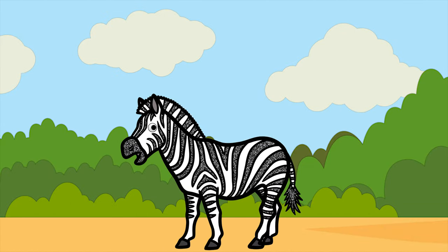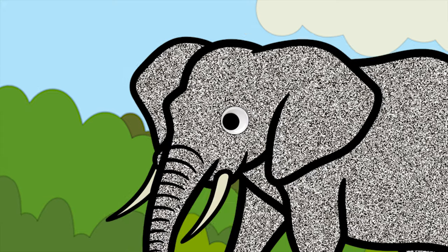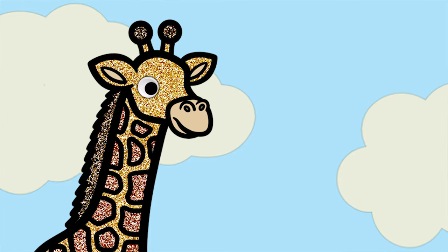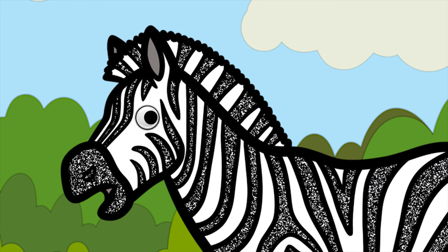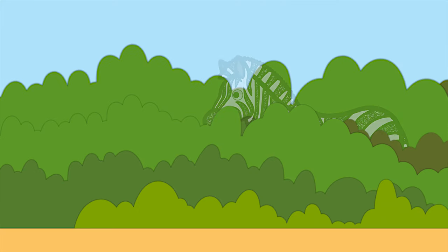Hello, my name is Zebra. There you are. You are the master of hiding, Zebra. What's your secret, Zebra? My black and white stripes make it harder for you to see when I'm hiding.